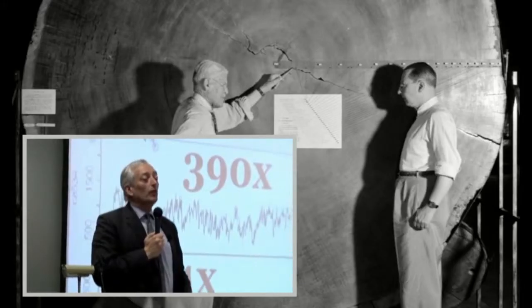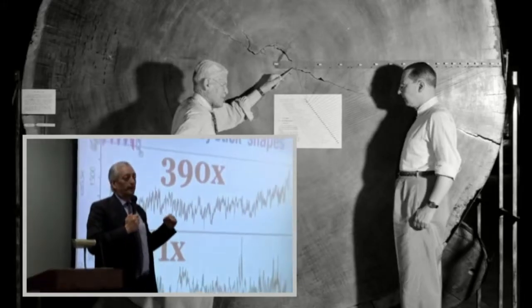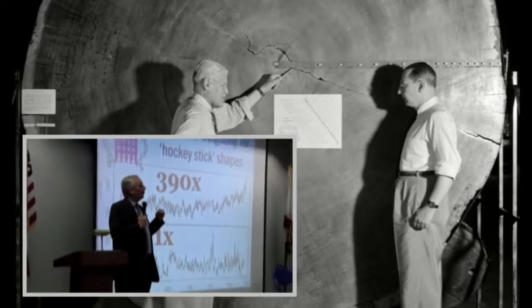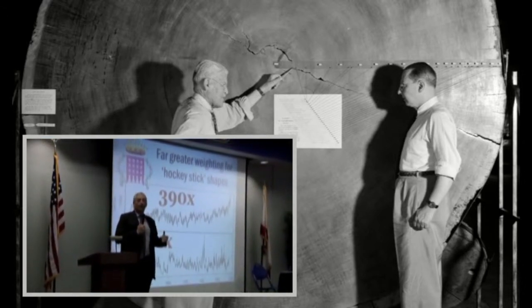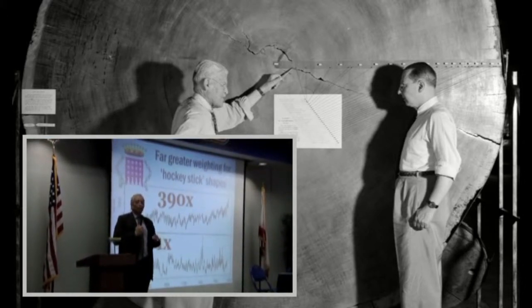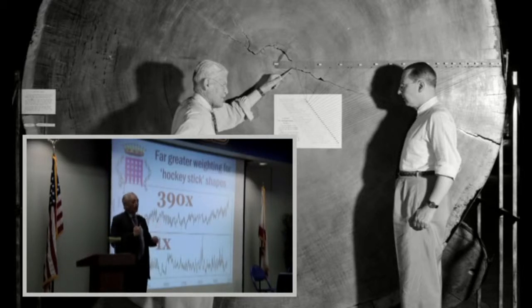The first thing they did was try to reconstruct temperatures from the period before we had thermometers by cutting down old trees and counting the tree rings back from today, then seeing which ones were wider than others because they thought that wider tree rings meant warmer weather.